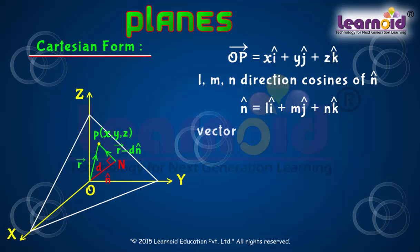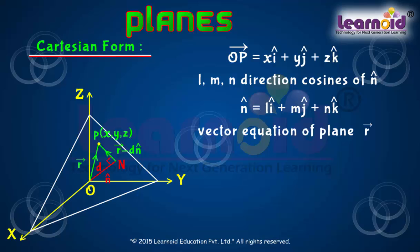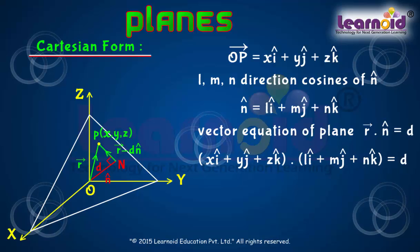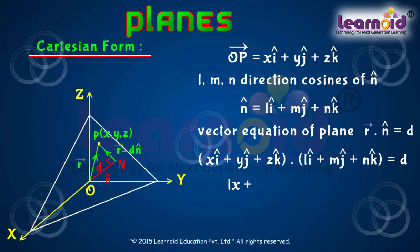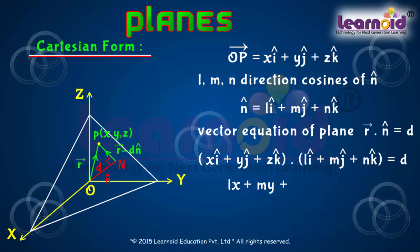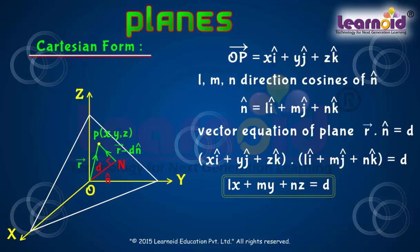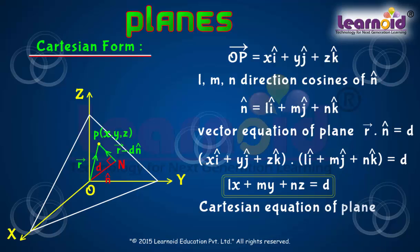Now, the vector equation of the plane is R vector dot N-cap is equal to D. Substituting, we get Lx plus My plus Nz is equal to D. This is the Cartesian equation of the plane in the normal form.